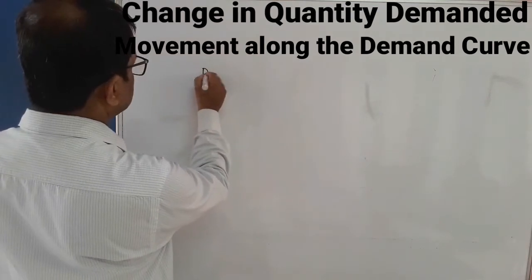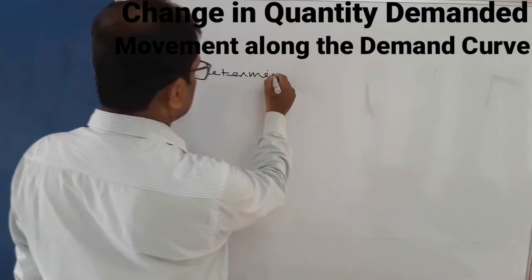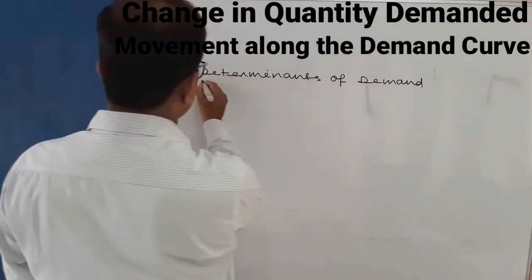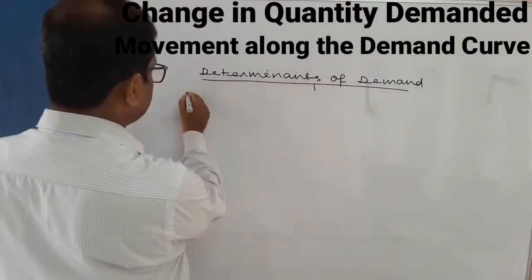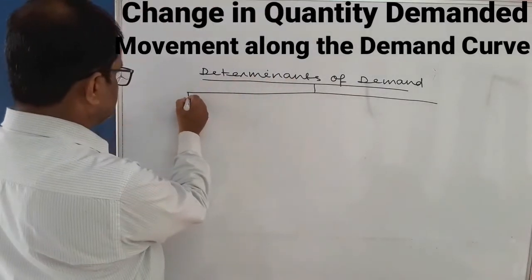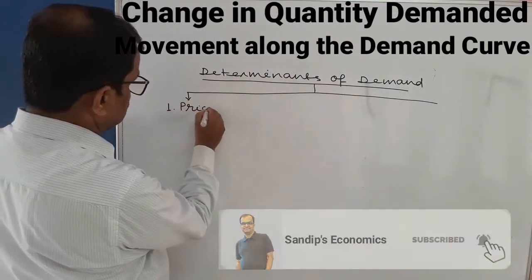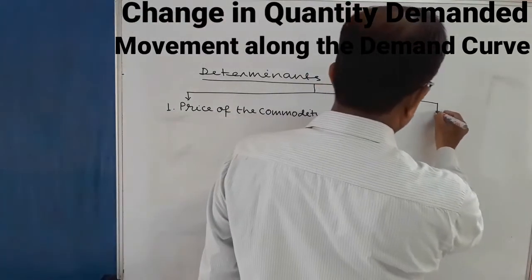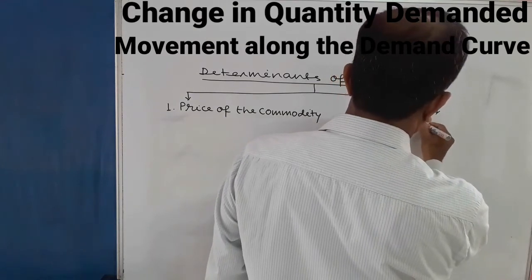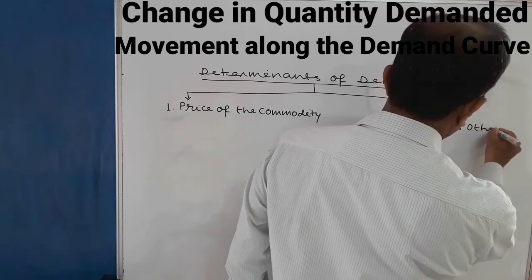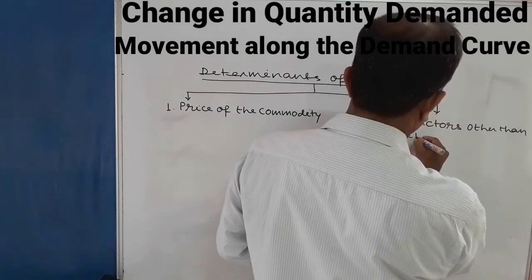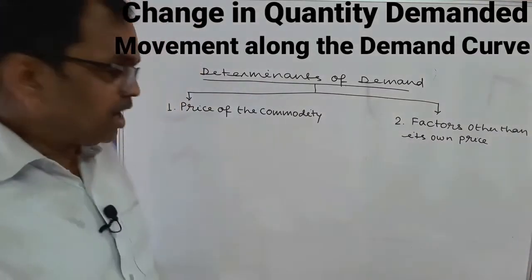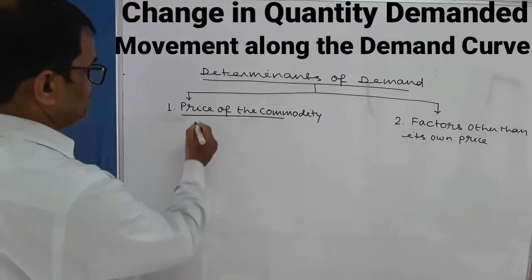There are two determinants of demand. Number one is the price of the commodity — this is one factor on which demand of any commodity depends. And the second factor is the factors other than price, for example: income of the consumer, price of substitute goods, price of complementary goods.